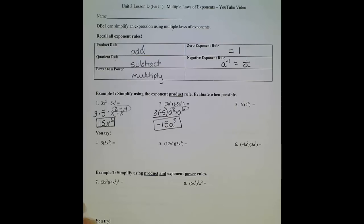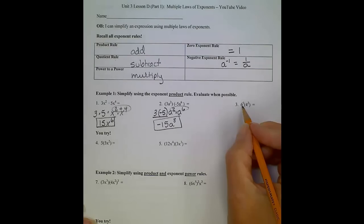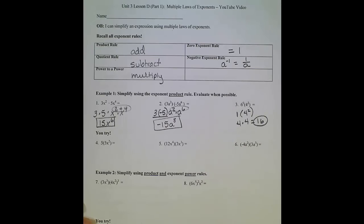Now looking at number 3, I have 6 to the 0 times 4 squared. I don't really have any regrouping to do here because they're both numbers. I remember that 6 to the 0, anything to the 0, equals 1, and 4 squared will just be 4 squared. Remember, 4 raised to the 2nd power is 4 times 4, not 4 times 2. 4 times 4 will give us 16.